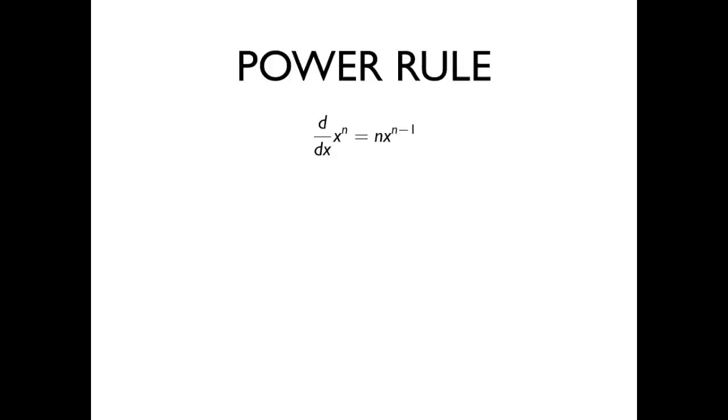The power rule states that the derivative of x to the n is n times x to the n minus 1.